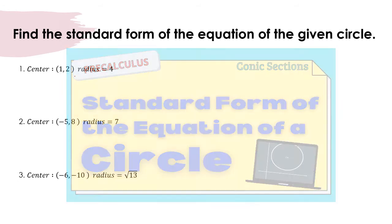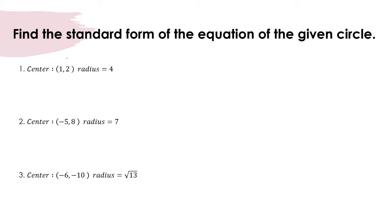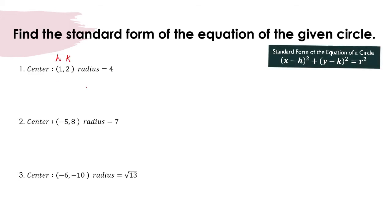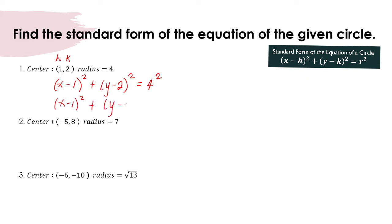For number 1, the center is (1, 2), so h is 1 and k is 2. Following the equation of the circle, this gives us x minus 1 squared plus y minus 2 squared is equal to r squared. Since the radius is 4, we compute 4 squared. Therefore, the equation is x minus 1 squared plus y minus 2 squared is equal to 16.